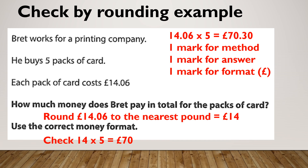At entry level 3, we use rounding to check our answers quite a lot. Here's an example. Brett works for a printing company — he buys 5 packs of cards, each costing £14.06. The exact answer is £70.30, worth 3 marks. If the question then asks you to round £14.06 to the nearest pound, because this is a 0, it stays as £14, worth an additional mark. Your check would be 14 times 5 equals £70. When doing a check, you do the exact same sum but replace your original number with your rounded number.